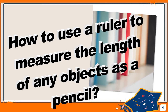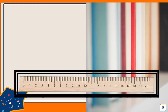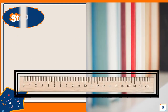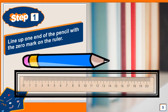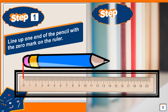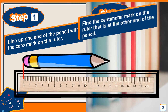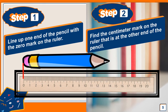Let's bring a ruler. Step 1: Line up one end of the pencil with the zero mark on the ruler. Step 2: Find the centimeter mark on the ruler that lines up with the other end of the pencil.